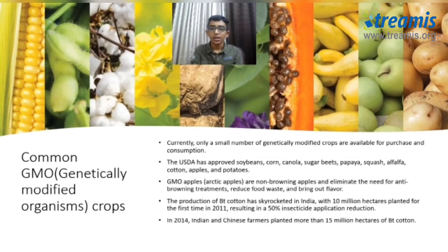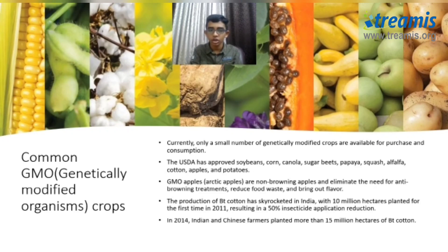Soybeans, corn, and canola — what do all these have in common? These are the Bt crops that the USDA has approved for use. Bt cotton is the only crop available for use in India as an agricultural biotechnology crop, but it is very popular. In 2014, Indian and Chinese farmers planted more than 15 million hectares of Bt cotton.